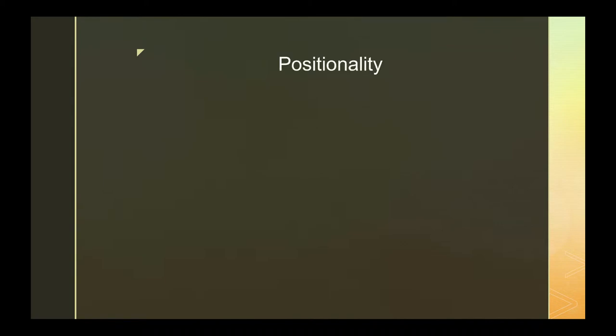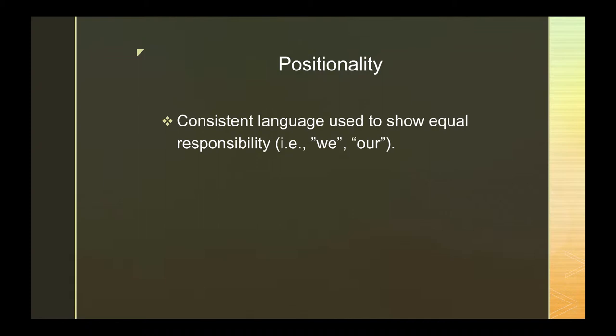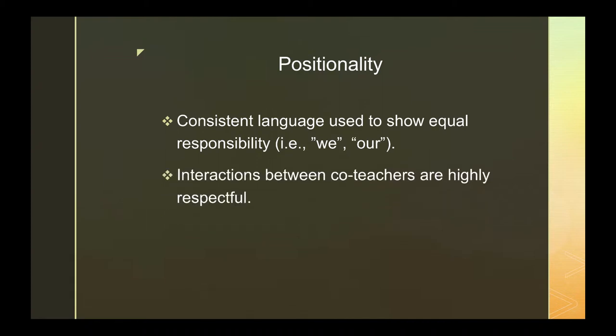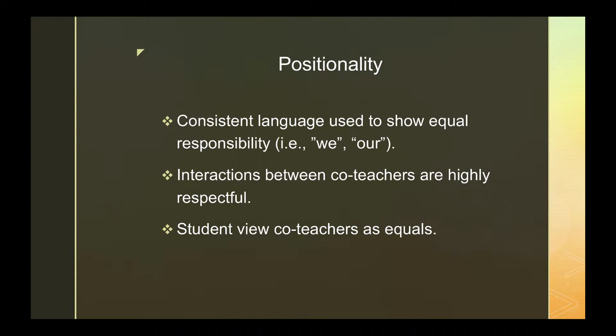It's important for classroom management and seamless instruction to communicate to students that both teachers are positioned equally in the class by authority and respect. We do not want students playing what I call the 'mom and dad game,' trying to go to one co-teacher over another to meet their needs. To foster equal positioning, make sure consistent language such as 'we' or 'our' is used, and interactions between co-teachers are visibly respectful. This should ensure students view both co-teachers as equals.